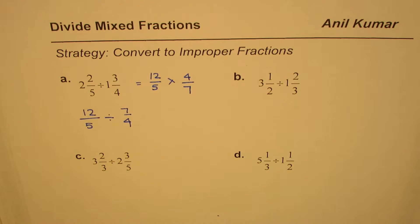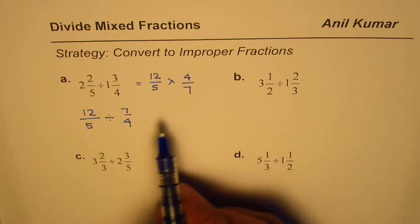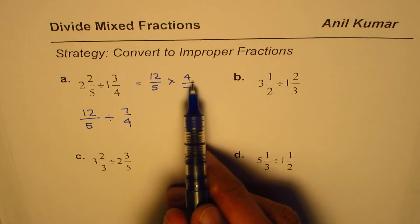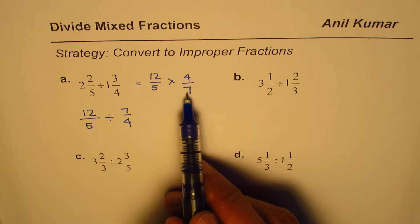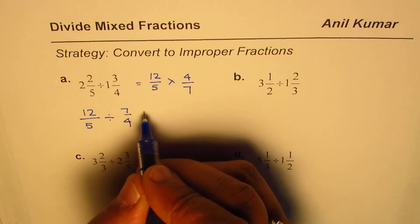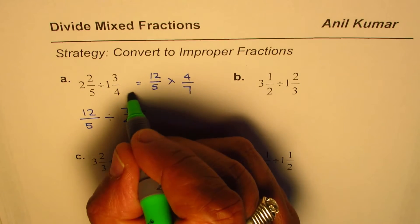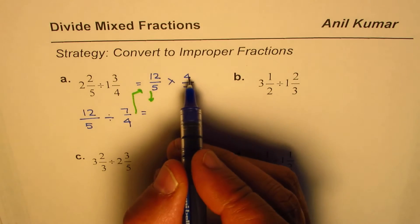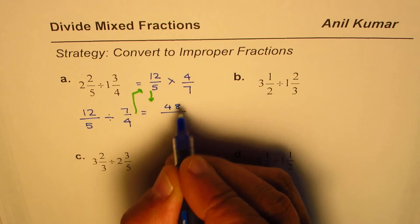Now at this stage you can multiply the numerators and denominators to write the answer. First look for any scope of simplifying. In this case we do not have any common number to divide numerator and denominator, so we can straight away write down our answer. We move from here to this place and now we're coming down. We can just multiply: 12 times 4 is 48 divided by 35.